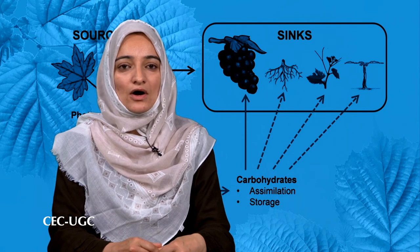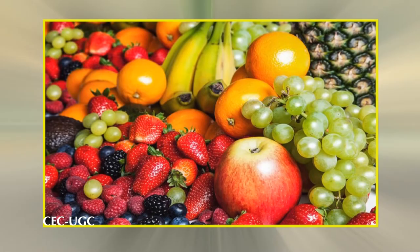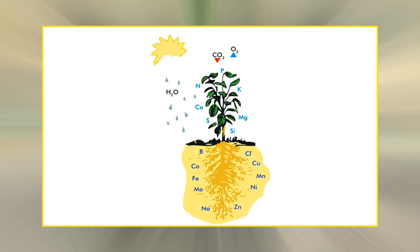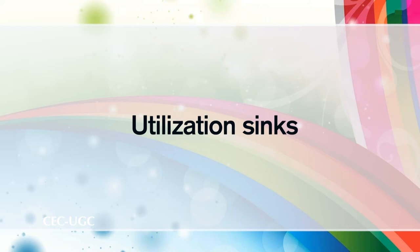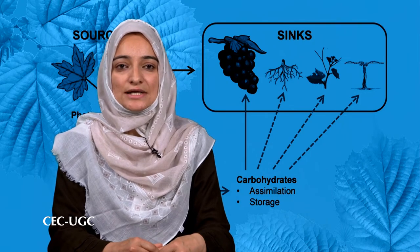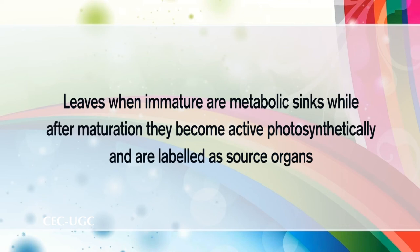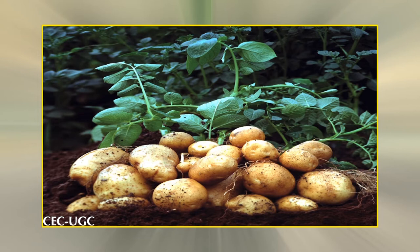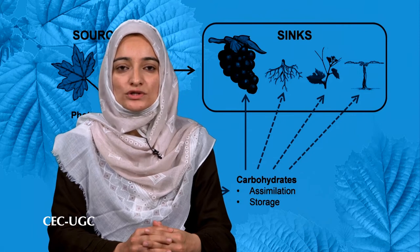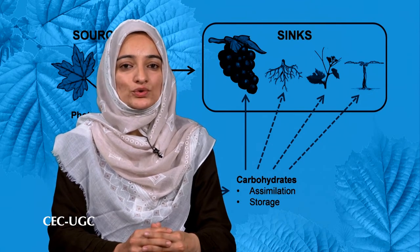Generally, storage sinks are meant for essential processes including reproduction in the form of potato tubers, seeds and fruits, or mineral absorption in the form of roots. Utilization sinks are metabolically very active, comprising actively growing tissues such as immature leaves and meristems. For instance, leaves when immature are metabolic sinks, while after maturation they become photosynthetically active and are labeled as source organs. Similarly, potato tubers during growth are storage sinks, but turn into source organs during sprouting, from where stored food is mobilized to provide nutrients for bud growth.